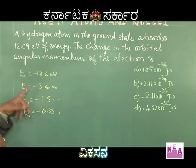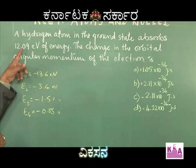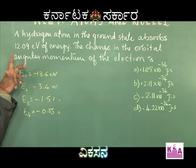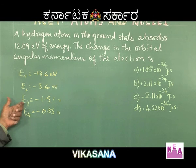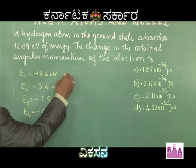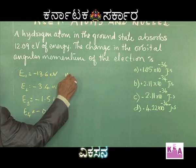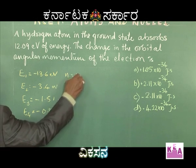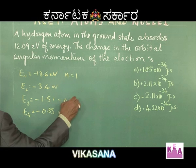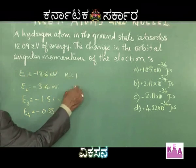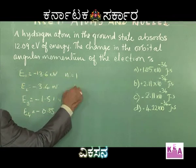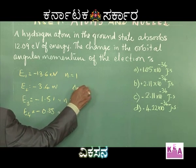On absorbing 12.09 eV, the transition takes place from the ground state (n = 1) to the third level (n = 3). The change in principal quantum number is ΔN = 3 − 1 = 2.